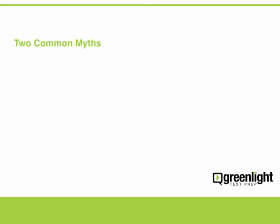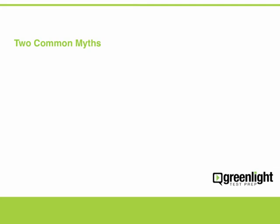There are two common myths about reading comprehension questions that can cause students to develop ineffective test-taking strategies. The first myth is that reading comprehension questions are designed to test your ability to read quickly. This is not true. Students who believe this make the mistake of reading each passage at a lightning pace — they read so quickly that they fail to comprehend much, if any, of the information. As a result, they cannot answer any questions and are forced to re-read the passage. There's some irony in this belief, because it becomes a self-fulfilling prophecy.